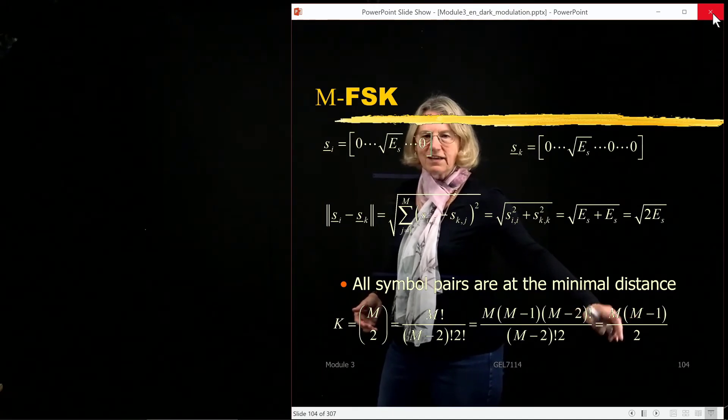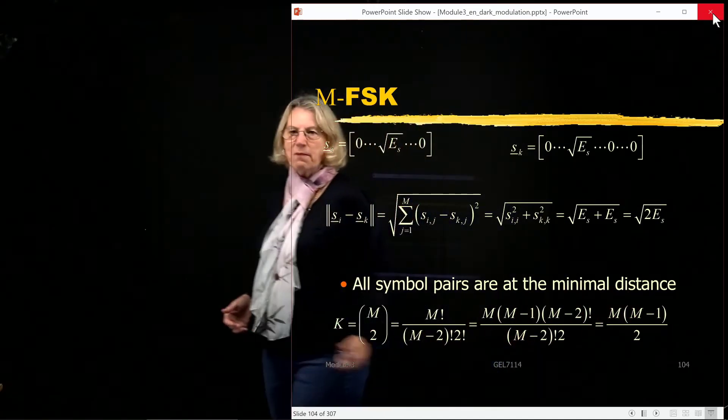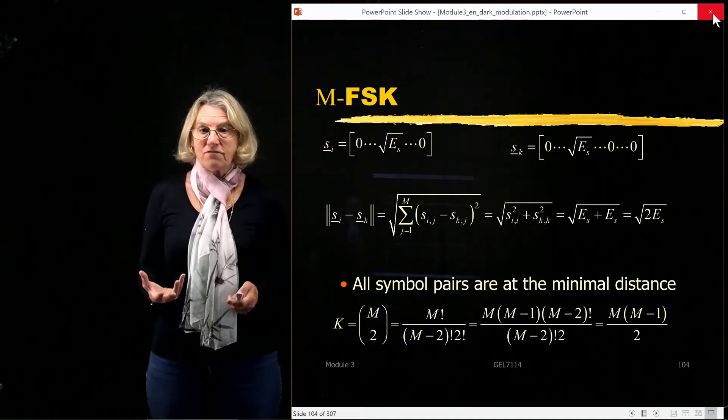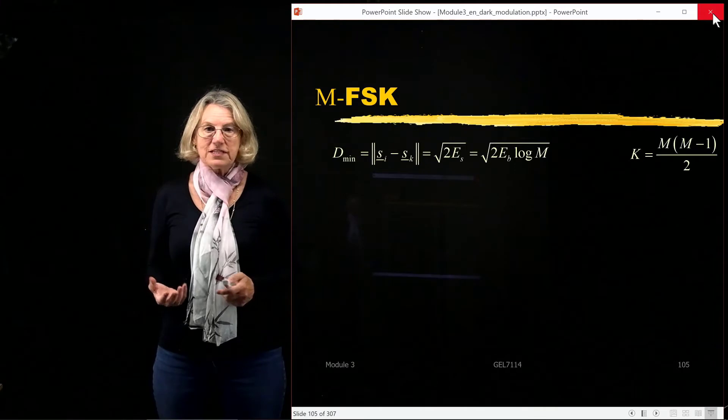Odd or even multiplied gives an even number divided by two. We're going to get a nice whole number for this. So now I have the number of symbols at the minimal distance,